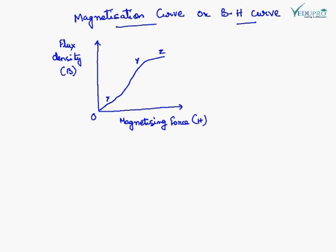Magnetization curve is a B-H curve. B stands for magnetic flux density and H is magnetizing force. A curve is shown.